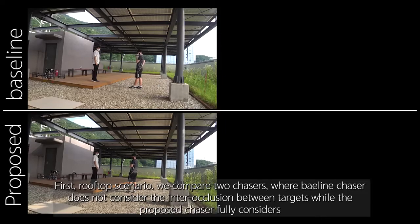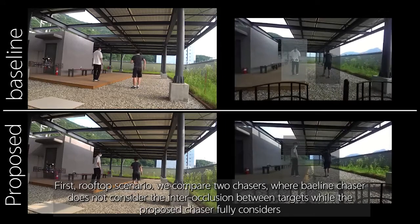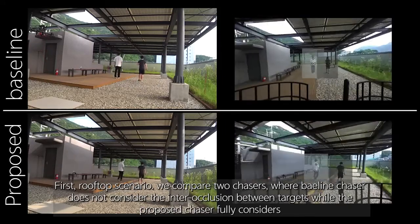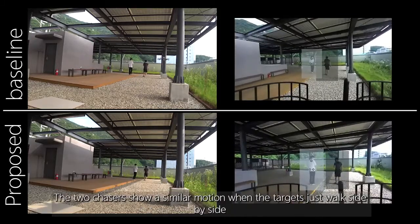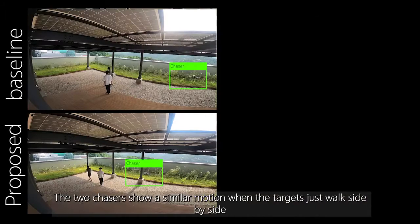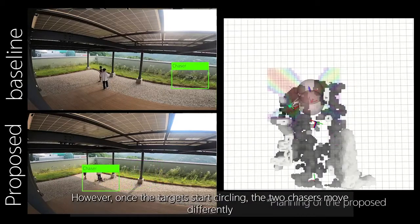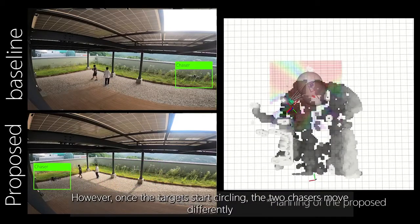We compare two chasers, where baseline chaser does not consider the inter-occlusion between targets, while proposed chaser fully considers. The two chasers show a similar motion when the targets just walk side by side. However, once the targets start circling, the two chasers move differently.